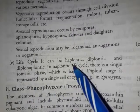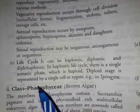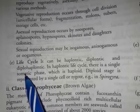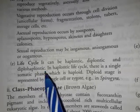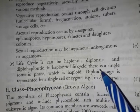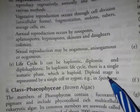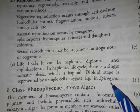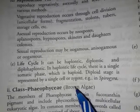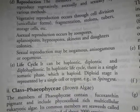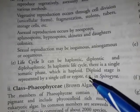In the life cycle there can be haplontic, diplontic, and diplohaplontic alternation. In the haplontic life cycle there is a single somatic phase which is haploid. The diploid stage is represented by the single cell or the zygote — Spirogyra is an example where the zygote is the diploid stage. This zygote undergoes reduction division to produce haploid cells.